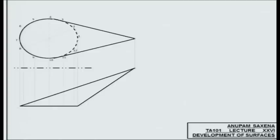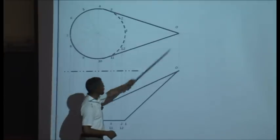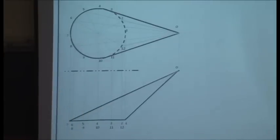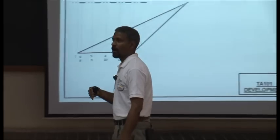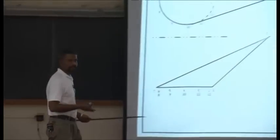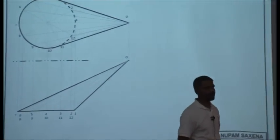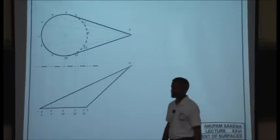Divide the base into an equal number of parts, label these vertices 1 to 12, and draw generators from each of these vertices to join the apex O. Project those vertices down onto the front view; the apex of the cone is O. Join each of these vertices to the apex. The surface of this weird-looking cone is now approximated by a bunch of triangles on the surface of the solid.